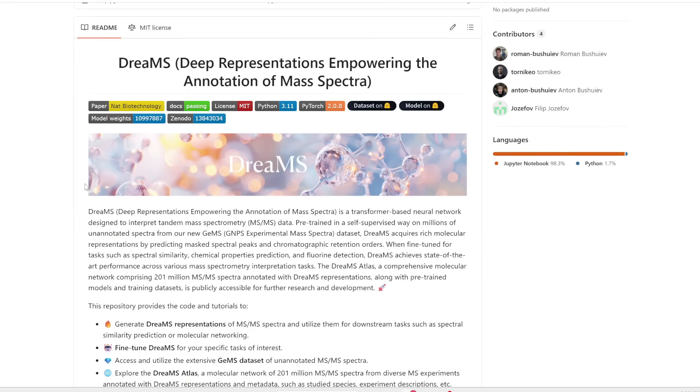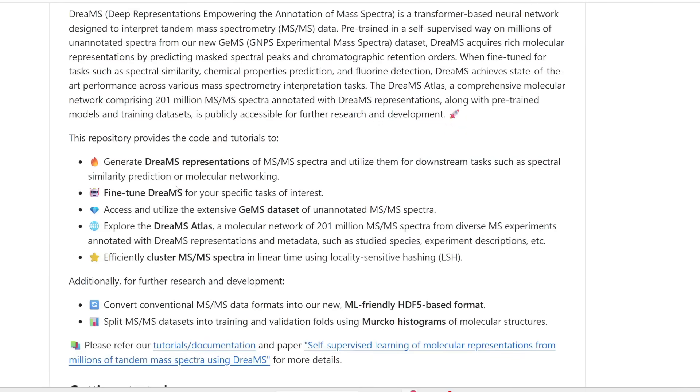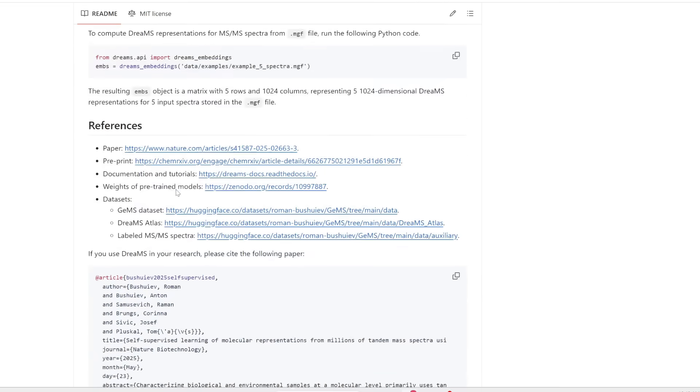Now, here's the awesome thing. They've actually released the code to this. Everything is on GitHub and Hugging Face. This is under the MIT license, and it gives you all the instructions on how to use Dreams to map a molecular spectrum onto a network graph. It also gives you instructions on how to fine-tune Dreams to look for specific properties. All the instructions are over here for you to get started.